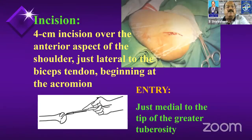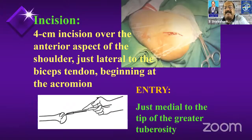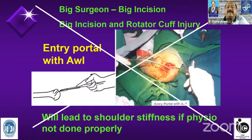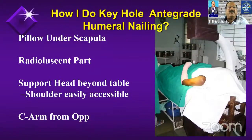Coming to the antegrade entry, literature always says to expose with a four centimeter long incision at the anterolateral anterior aspect of the shoulder, just lateral to the biceps tendon, expose the shoulder rotator cuff, then take an incision at the junction of articular and non-articular portion using an awl. This is a well-accepted modality of entering without damaging the rotator cuff. However, I have never used this entry. Since day one, I have been doing a keyhole entry without damaging the rotator cuff.